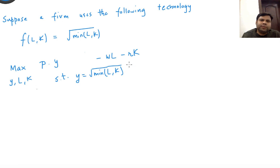How do we solve this problem? We'll solve this in two steps. First, we'll solve the cost minimization problem of the firm, which is minimize with respect to L,K: wL plus rK, subject to y equals the root of min(L,K).